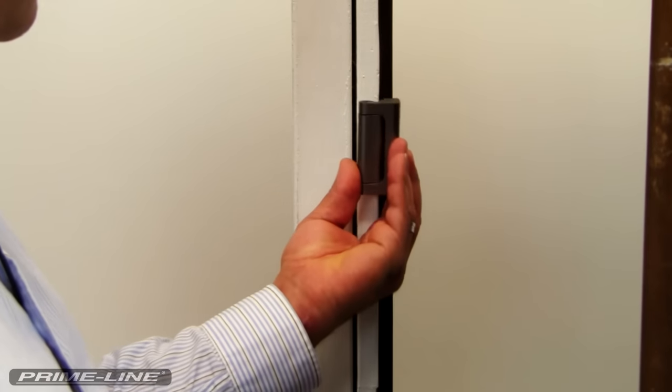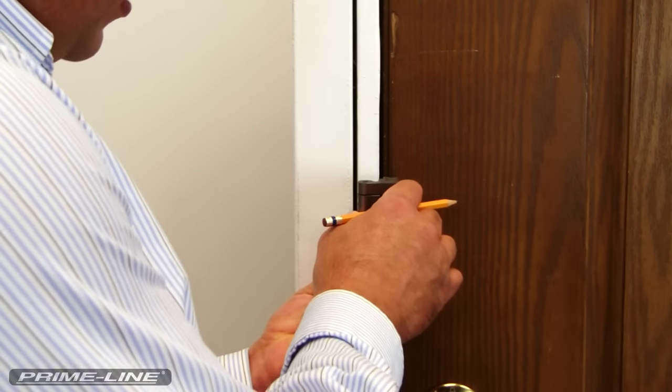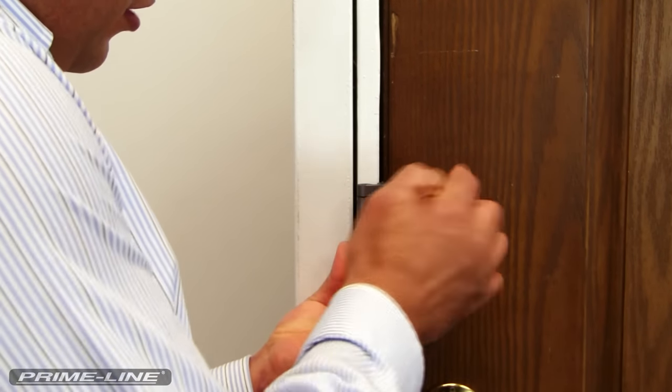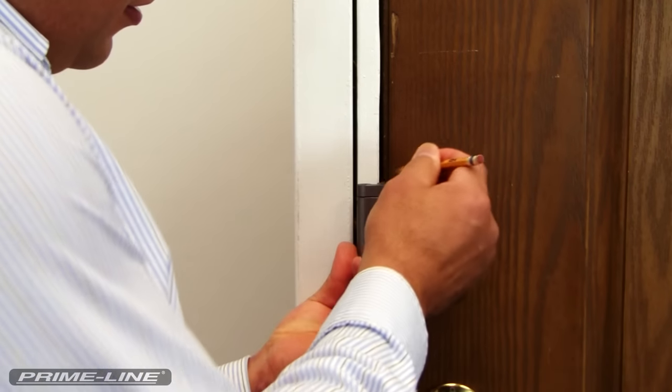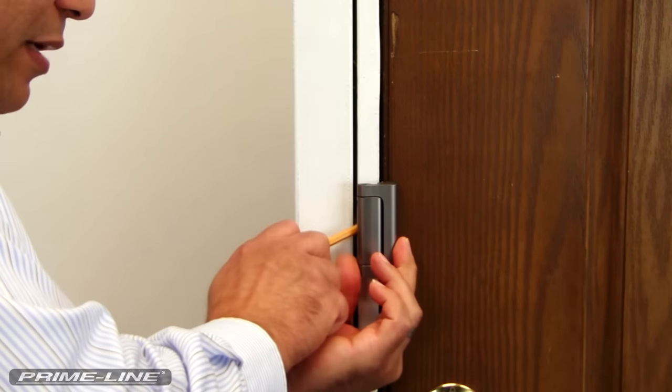If your lock can be surface mounted, the rest is fairly easy. I'm just going to hold the lock in place against the door. We're going to mark the height and the backside of the mounting plate.